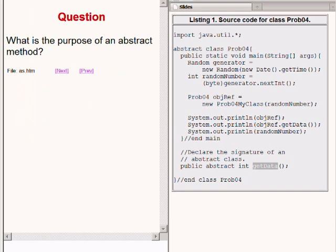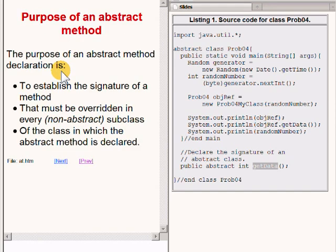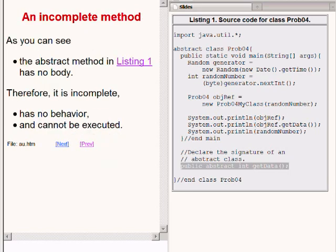So here is the next question. What is the purpose of an abstract method? And the answer is, the purpose of an abstract method declaration is to establish the signature of a method that must be overridden in every non-abstract subclass of the class in which the abstract method is declared.